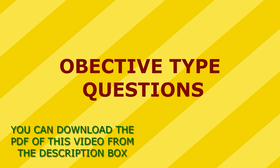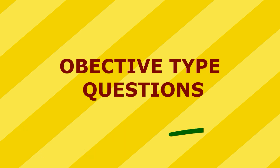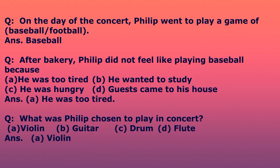You can download the PDF of this video from the description box. Let's start the objective type questions. On the day of the concert, Philip went to play a game of — two options are there: baseball or football. The answer is baseball.